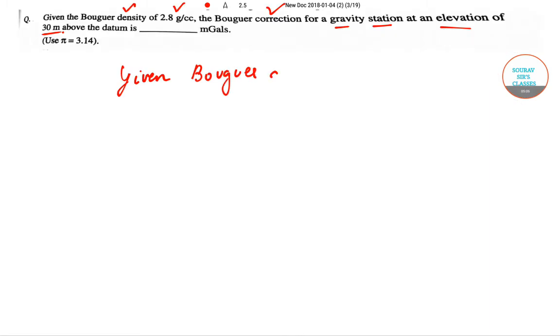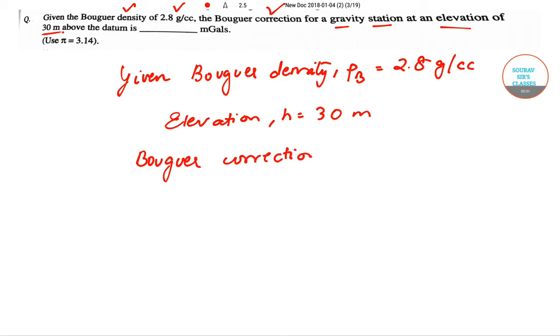So we have the Bouguer density and I'll represent it by the symbol rho p, so this is 2.8, and the elevation, the correction, and I'm denoting it by h is 30 meters. So the Bouguer correction is actually given by 2 pi rho p G h where G is nothing but gravitational constant.